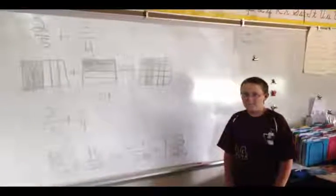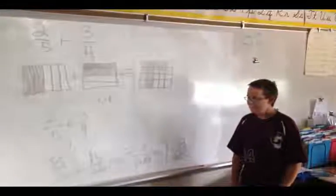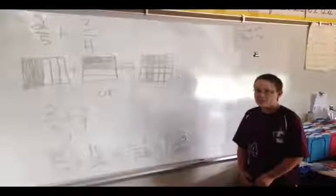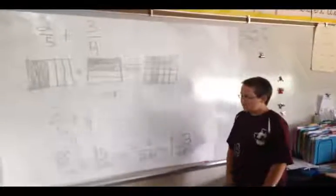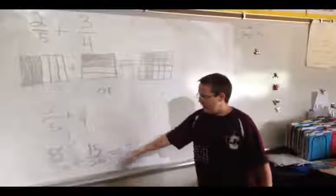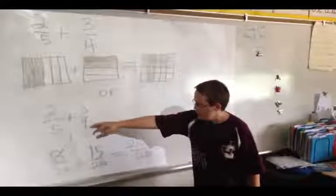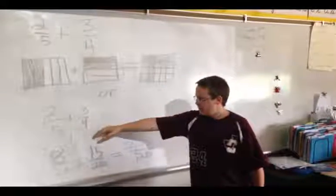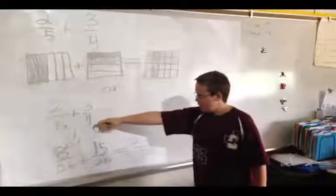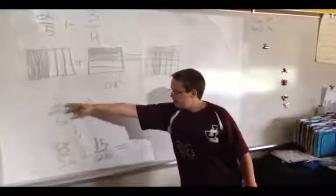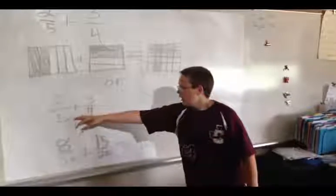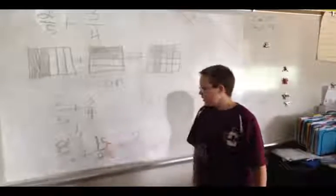Our math problem today is 2 fifths plus 3 fourths. So how can you do that using a model? You first find a common denominator. You have to do 5 times 4, but whatever you do to this, you have to do to this. So 4 times 2 equals 8.